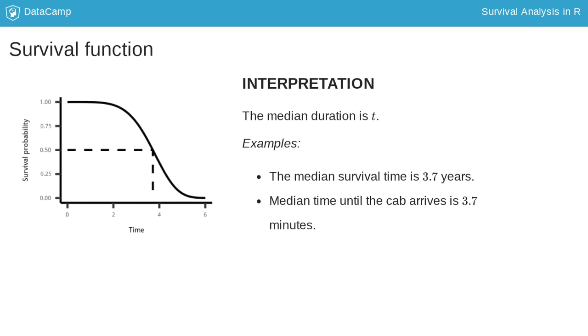We can also look at the survival function from the other direction by fixing a certain quantile. Most popular is looking at the median. The dashed line shows that the median duration time, so the time corresponding to the 50 percent quantile, is 3.7. So for our two examples, a possible interpretation would be the median survival time is 3.7 years, or in the cab example the median time until the cab arrives is 3.7 minutes. That means that half the cabs take less than or equal to 3.7 minutes to arrive at your house and the other half takes more than 3.7 minutes.